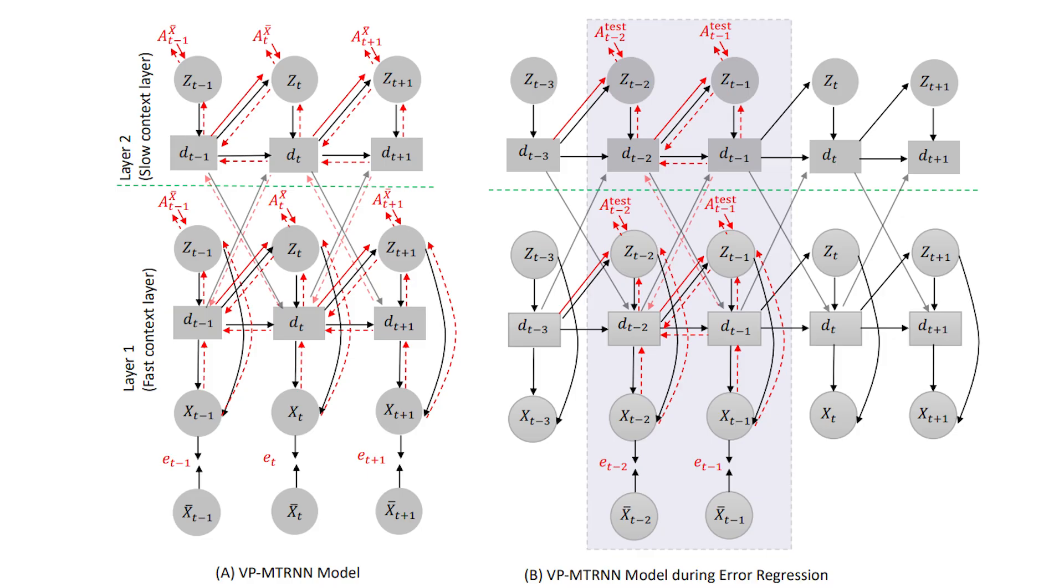But you'll also notice this PVRNN has multiple layers. Each time step has two hidden states, two prior inner states, and two posterior inner states. Why? Because these are multiple timescale RNNs. The bottom layer can change faster than the top layer. That means the bottom layer represents short-term memory, and the top layer represents long-term memory. The model can have as many layers as you'd like.